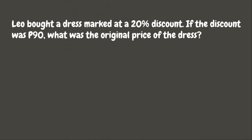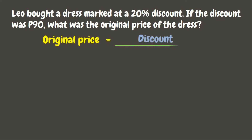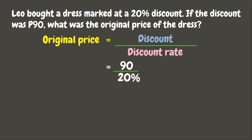Let's go back and solve our problem. This is an example of a discount problem. To solve for the original price in a discount problem, we simply need to divide the discount by the discount rate. Here the discount is 90 pesos while the discount rate is 20%, therefore we need to divide 90 pesos by 20%.